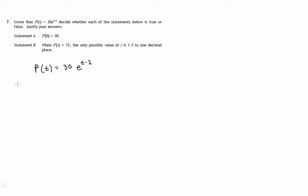Let's first look at statement A. It states that p of 0 is equal to 30. In other words, if we replace t by 0 in this formula — 30 lots of e to the power t minus 1, which now becomes 0 minus 1 — then we should end up with 30. Let's check that.